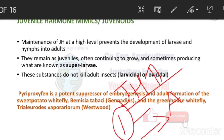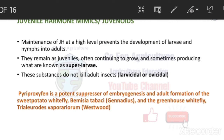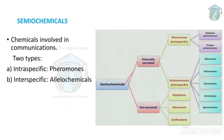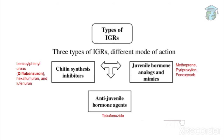Juvenile hormone's main role is to regulate the development of insects and regulate growth. Anti-juvenile hormones, on the other hand, prevent the synthesis of juvenile hormone itself. If juvenile hormone synthesis doesn't happen, then development also won't happen. This is the main role of anti-juvenile hormones. An example is tebufenozide. So the three types of insect growth regulators are: chitin synthesis inhibitors, juvenile hormone analogues and mimics, and anti-juvenile hormones.